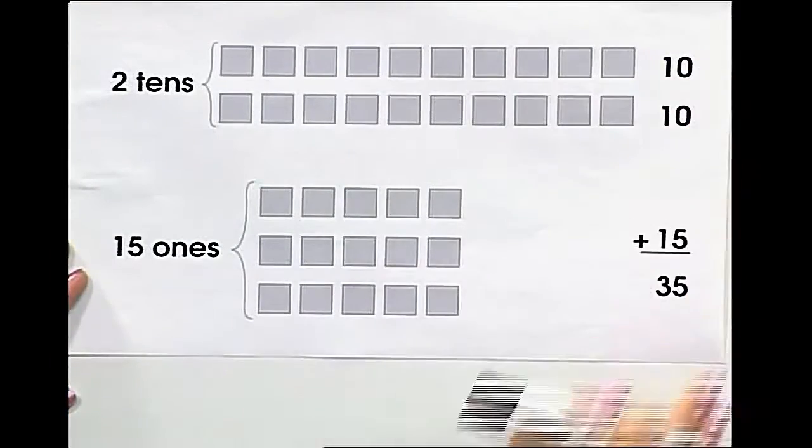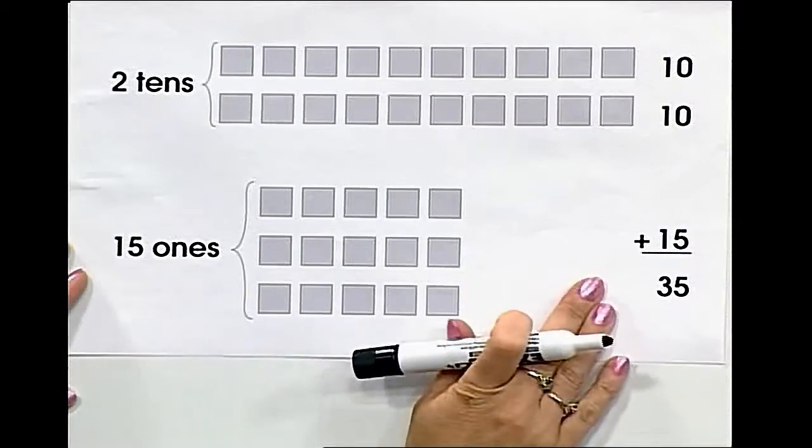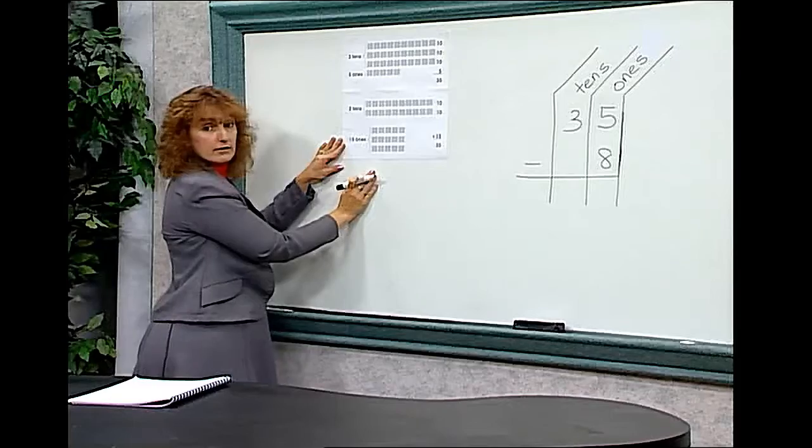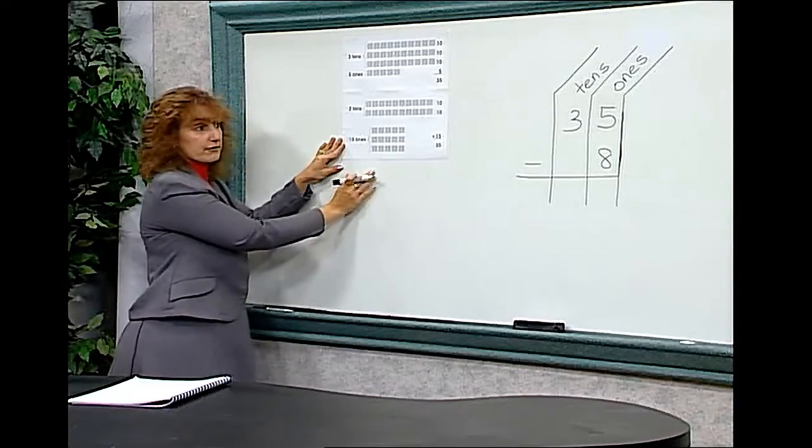We have now two tens and 15 ones, which is the same 35 as we had before. We've just regrouped the number in a different form.